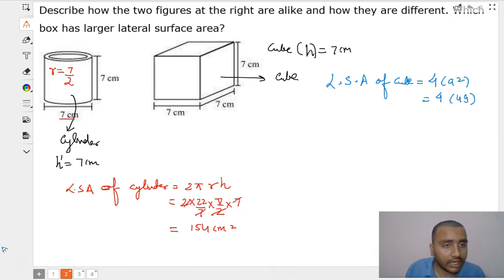So, 4 times of 49. So this is going to be equal to 196 centimeter square.